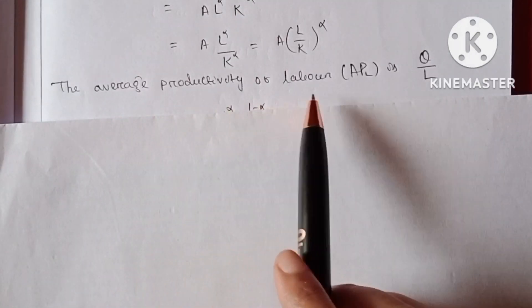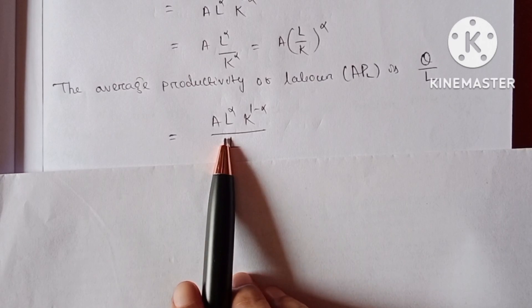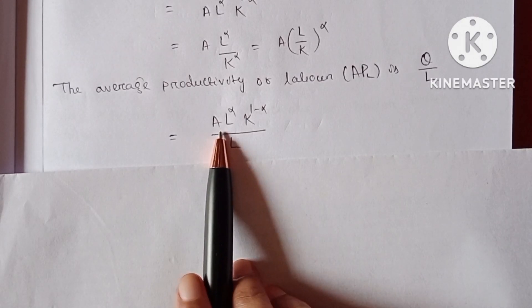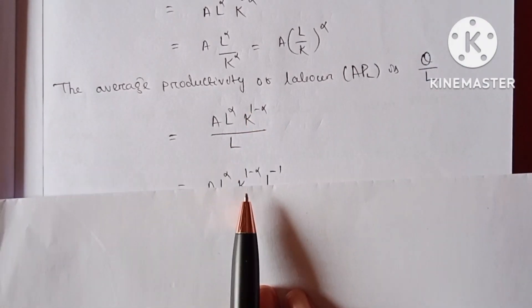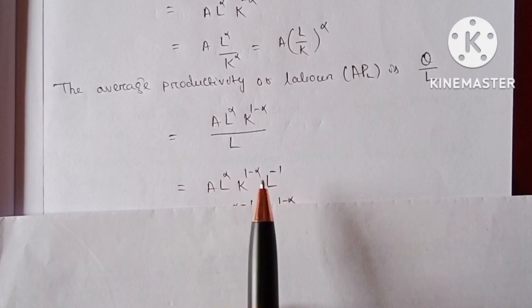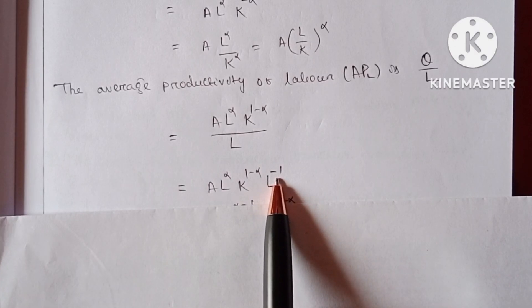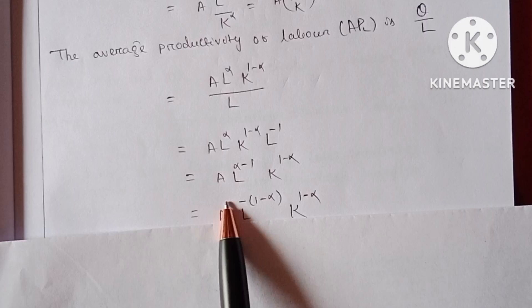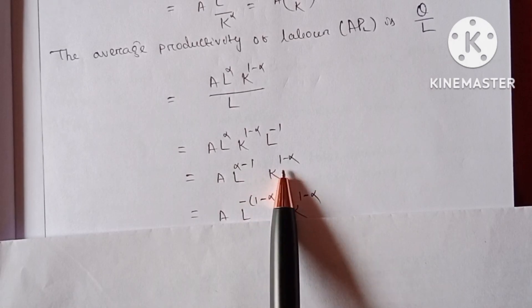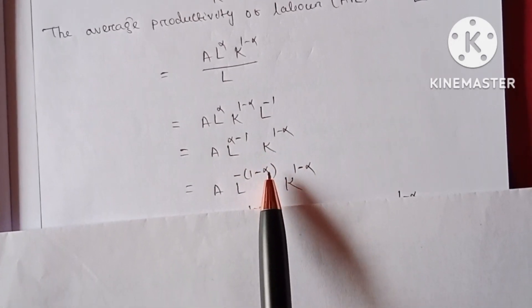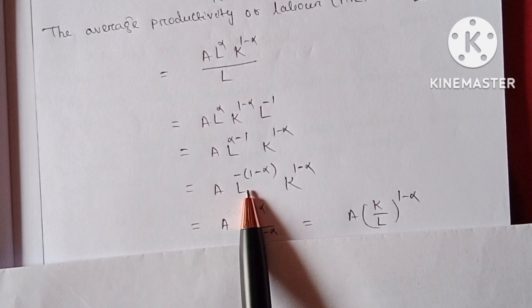Next, the average productivity of labor, APL, equals Q divided by L. Substituting Q, we get A into L to the power alpha into K to the power 1 minus alpha, divided by L. Taking L into the numerator gives L to the power minus 1, so solving gives A into L to the power alpha minus 1 into K to the power 1 minus alpha. We will now factorize L.